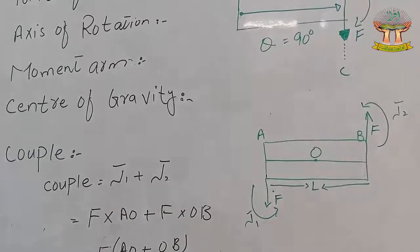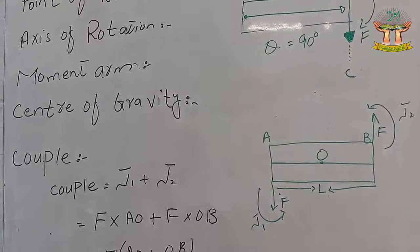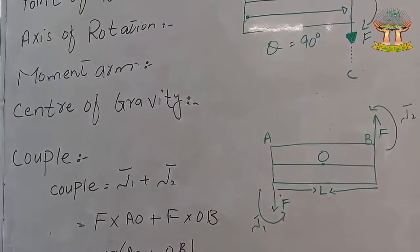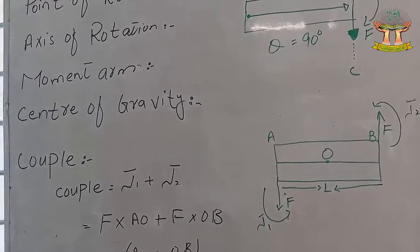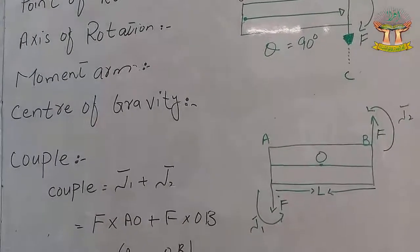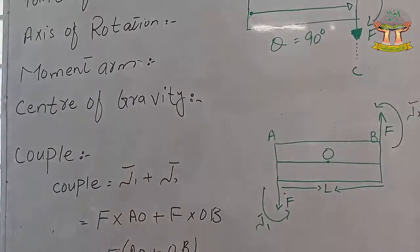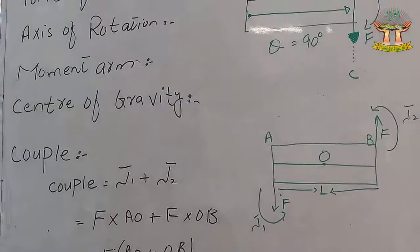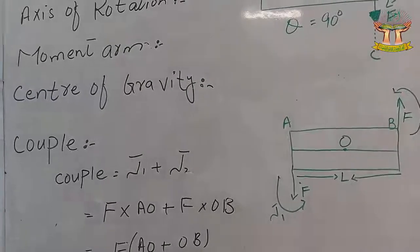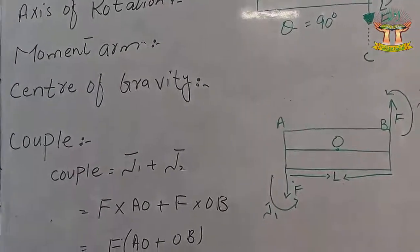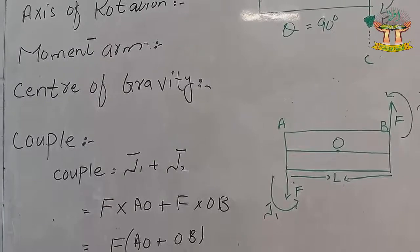Our next topic is center of gravity. The center of gravity of a body is the point at which the whole weight of the body acts vertically downward through the center of the earth. The center of gravity is the point where the weight of the body acts vertically downward.